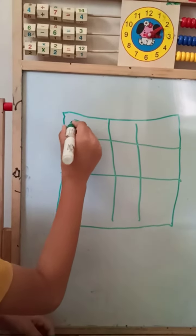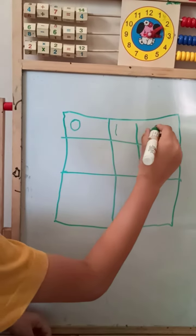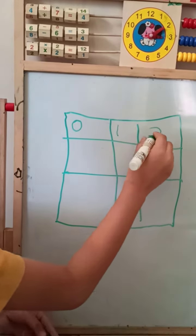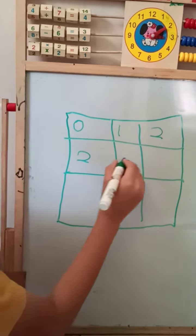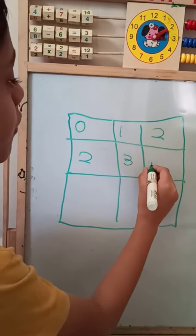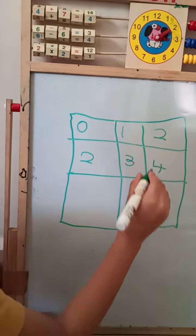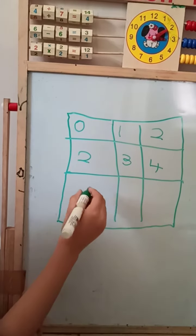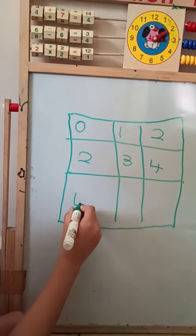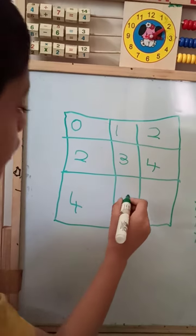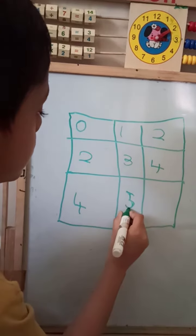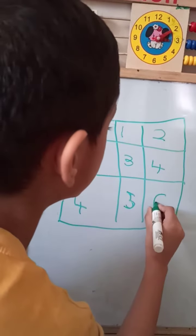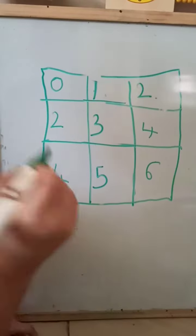Then we write zero, one, two. Take two in second place. Two, three, four. Again take four in third place. Four, five, five, six.